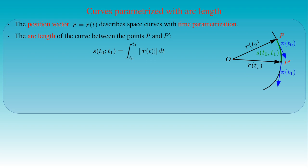If we fix the point P at the initial time t0 and let the parameter t run with the position of the point P', we obtain the arc length s as a function of t. Then the arc length s is the integral of the length of the tangent of the position vector between the initial time t0 and t.